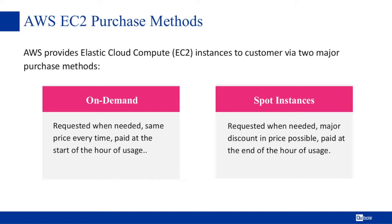When we think about interacting with AWS to take advantage of cloud services, we're thinking in particular about EC2 instances — Elastic Cloud Compute — which are computers launched for us inside the cloud where we run our processes. There are two different methods to purchase these instances. On-demand instances are purchased when you need them, are the same price every time, and are paid at the start of the hour. The other method is spot instances, which are also requested when needed but can be purchased at a major discount.